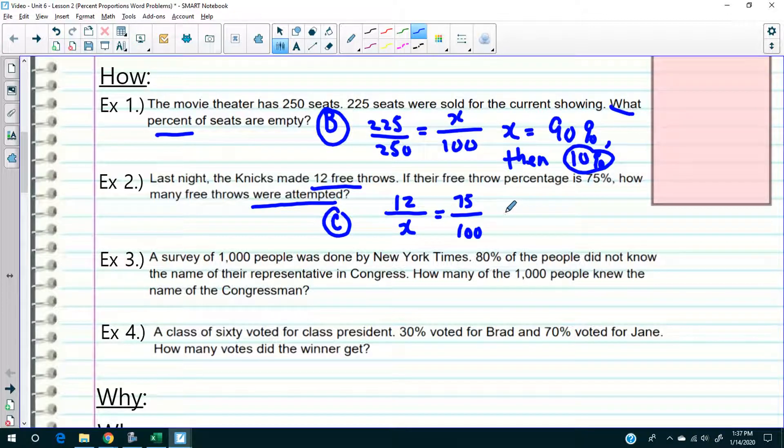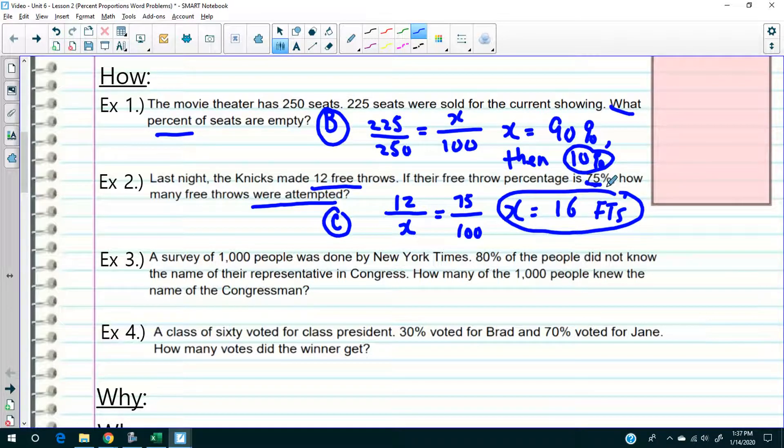Let's multiply. So 12 times 100, 1200 divided by 75 is 16. So the Knicks took 16 free throws and they made 12 of them, which equates to 75%. So that makes sense. Now certainly I could also see how this could be tough, so don't hesitate to come in the morning and get some extra help.